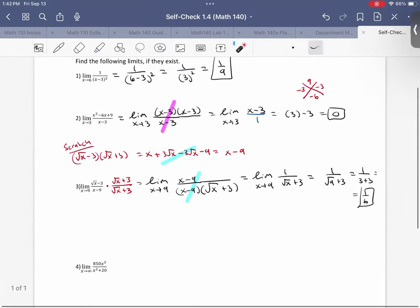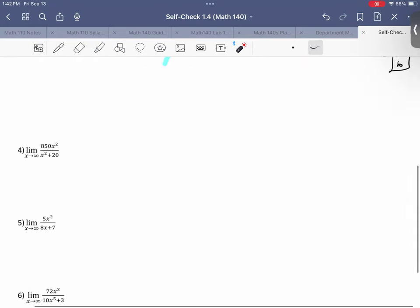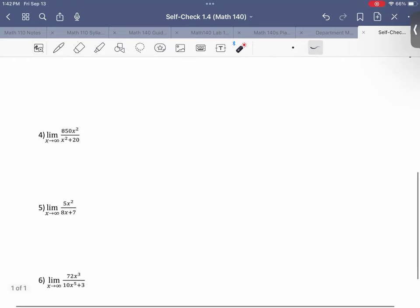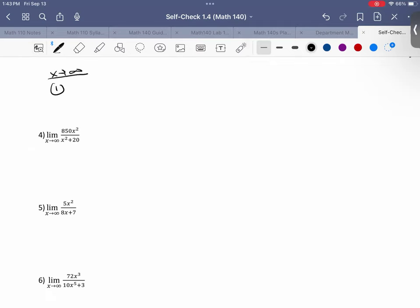All right, so that's a couple examples of just solving regular limits. We could just plug it in. We've got to factor something out, or we've got to conjugate or rationalize a numerator or denominator. Okay, so now let's go and check out some infinite limits. Limits going to infinity. So remember, there's always those three options that we have. Three options. We have the three options of bottom being bigger than the top, bottom being smaller than the top, and the bottom equal to the top, in terms of powers of the x.